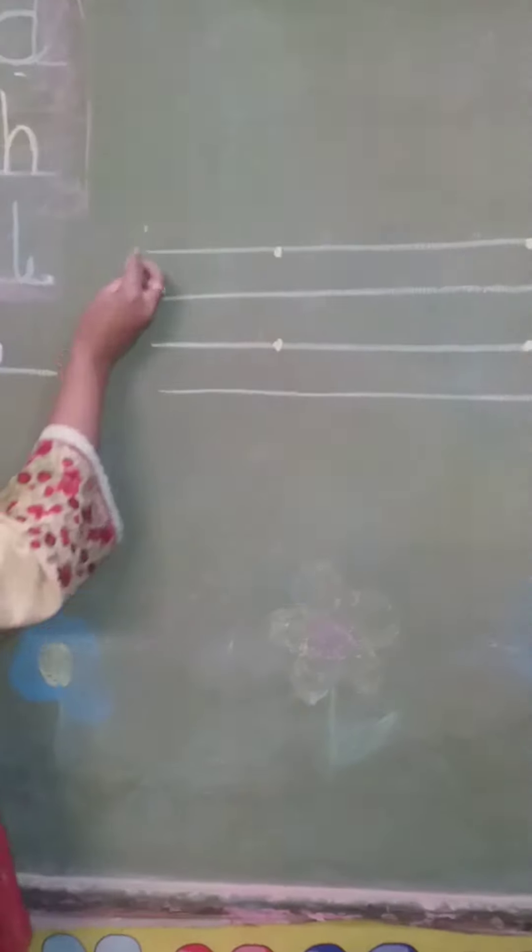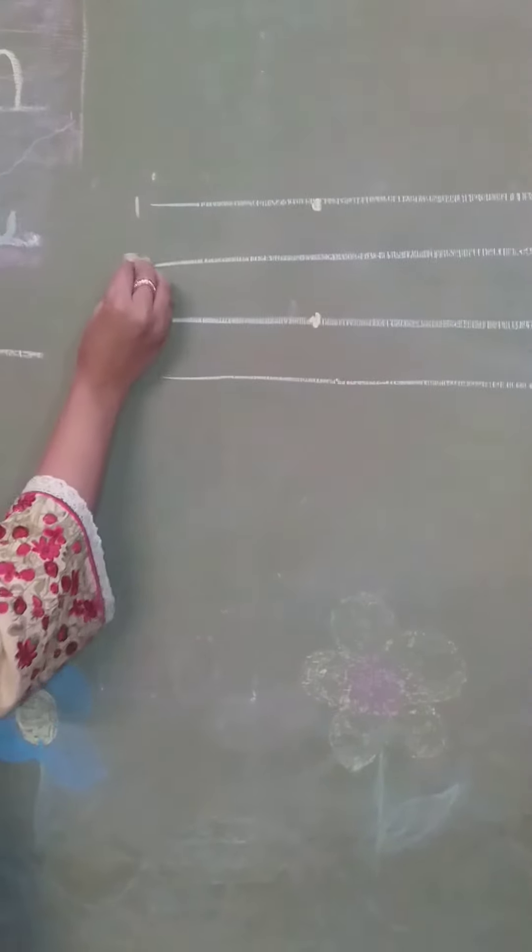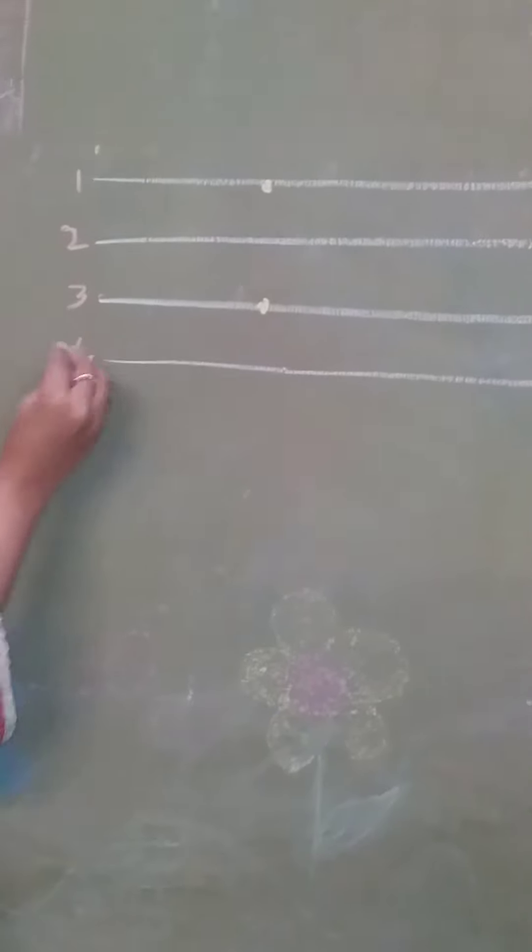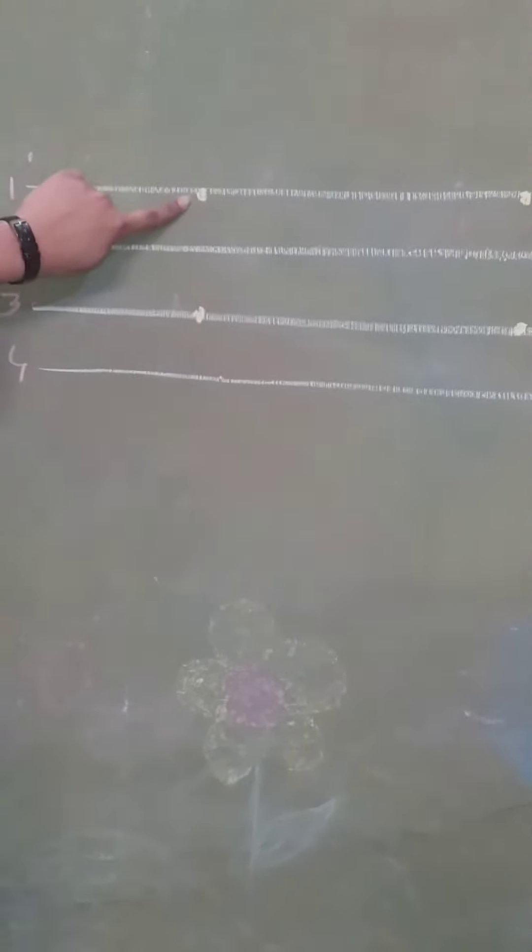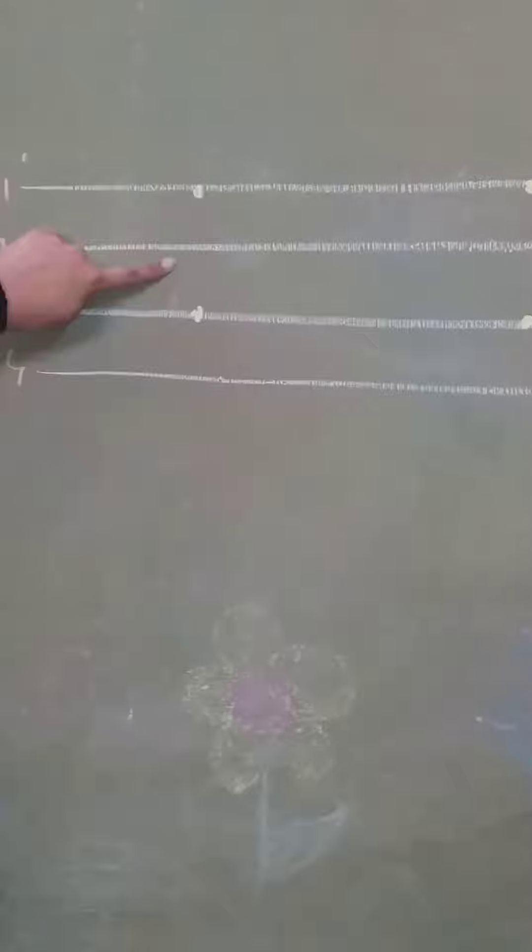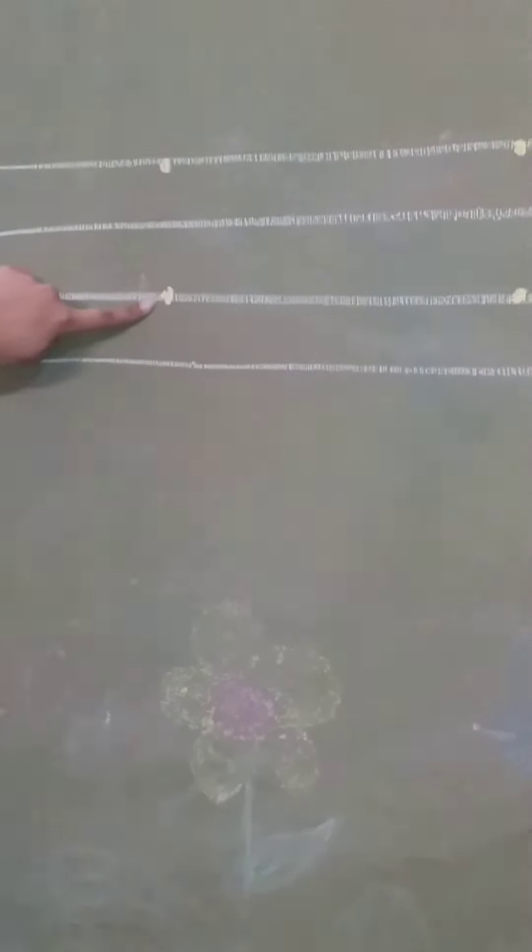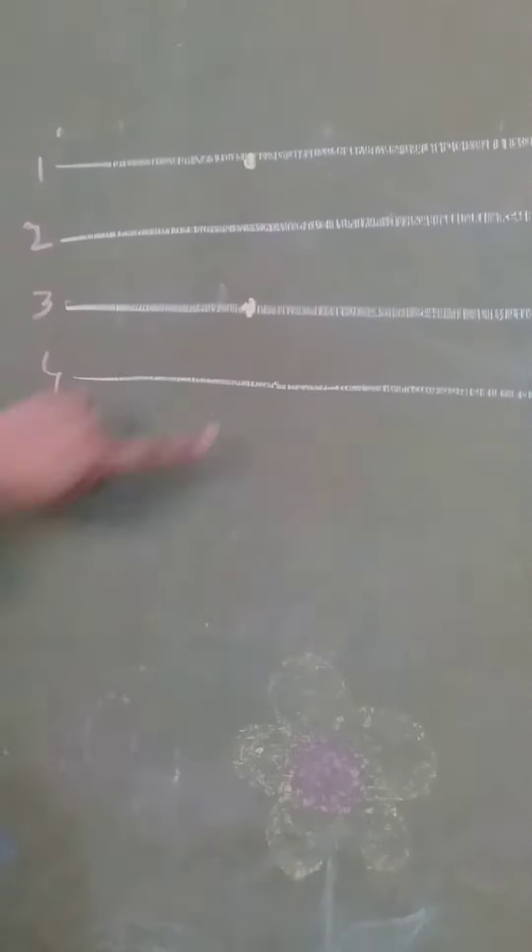We have four lines, one, two, three and four. So, first line have a dot, second line is empty, third line have a dot and fourth line is empty.